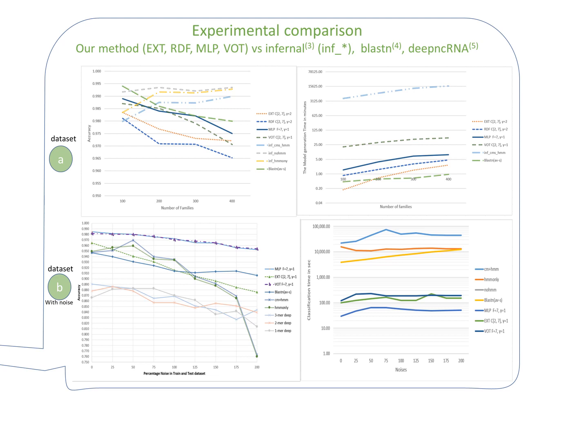In the second dataset, we test the capability of classification in the presence of noise. Each time we add 25% of noise on both ends of sequences. The results show that our method with MLP and voting model is the best comparing to all other methods. In the last figure, we show only the test time.